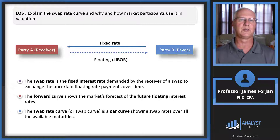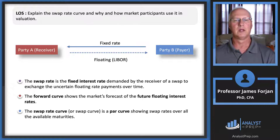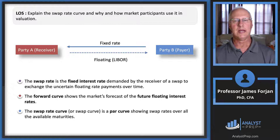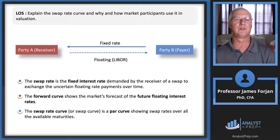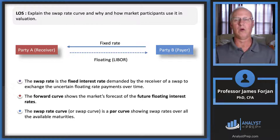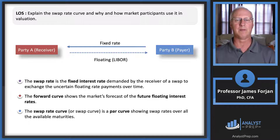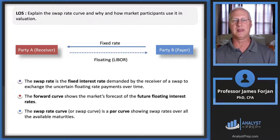The traditional illustration shows the fixed rate going to one counterparty and the floating rate — commonly LIBOR — going to the other. The swap rate is another name for the fixed rate demanded by the fixed-rate receiver to exchange uncertain floating rate payments over time. We can have one-week, one-month, one-year, two-year, five-year swaps, and so on across a wide range of maturities.